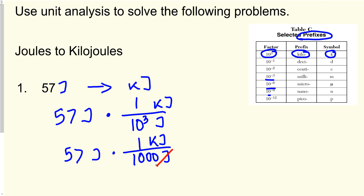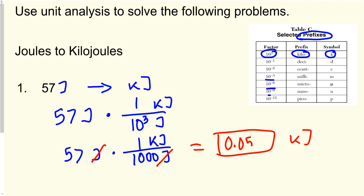You cross out joules and joules, and you're left with kilojoules as your unit. I highly recommend you use a calculator at all times to avoid silly mistakes. So 57 divided by 1,000 gives you 0.057 kilojoules.